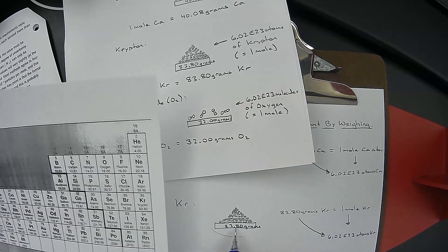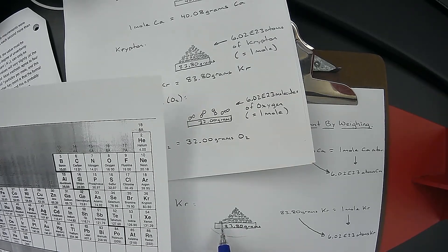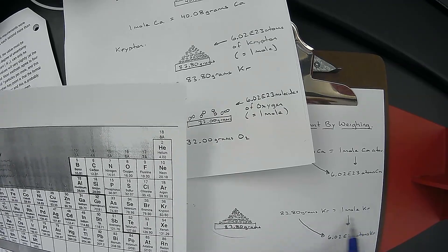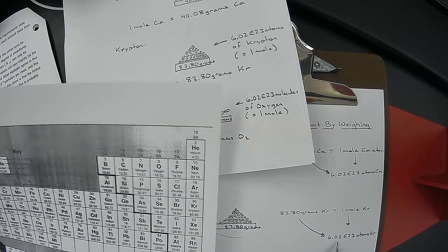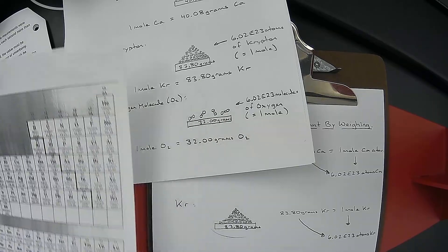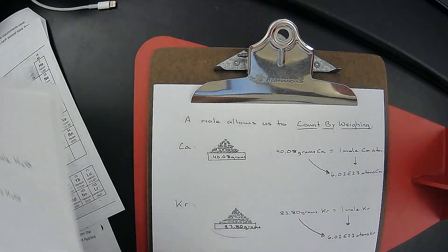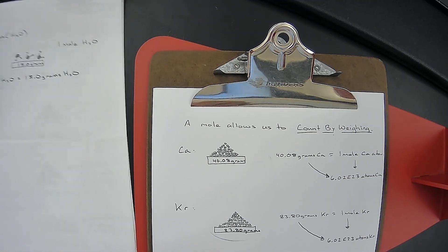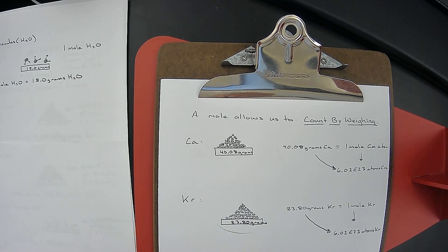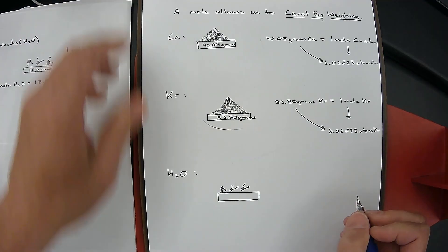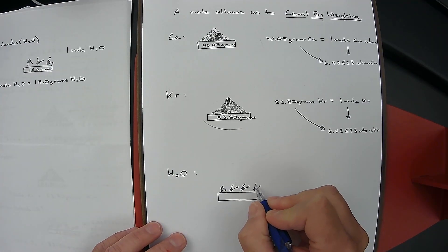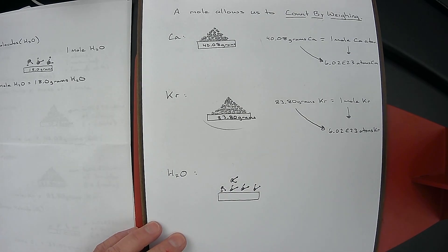There's no way we can count out 602 billion trillion atoms, so instead we count them by weighing. We know the molar mass of krypton is 83.80, so if we get the scale to read 83.80 grams, we know we have a mole, which is equivalent to 602 billion trillion atoms of krypton. Now the last example is water, H₂O. If we put water molecules on the balance — an O with two H's — we calculate the molar mass.